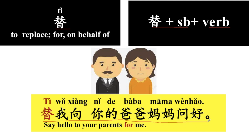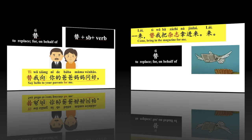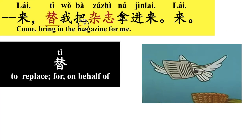替我向你的爸爸妈妈问好。Say hello to your parents for me. 好，问好就是to say hello. 向，向就是toward. 好，替我向你的爸爸妈妈问好。来，替我把杂志拿进来。